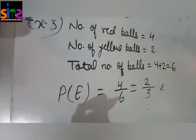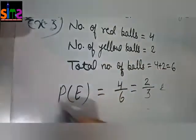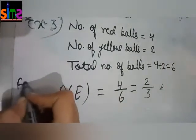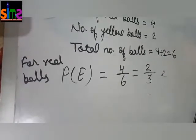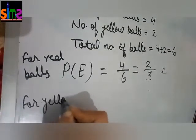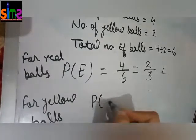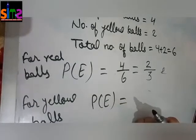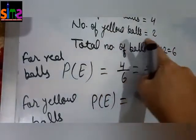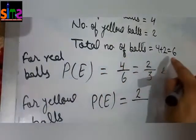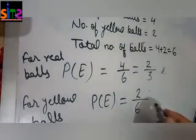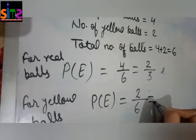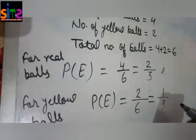But if the question was: what is the probability of getting a yellow ball? For red ball it was four, but now we are going to find the probability for yellow ball. The favourable outcome for yellow ball is two and the total number of outcomes is six. So two upon six is the probability of getting a yellow ball. Since two and six can again be divided by two, one upon three is the probability of getting a yellow ball from the bag without looking into it.